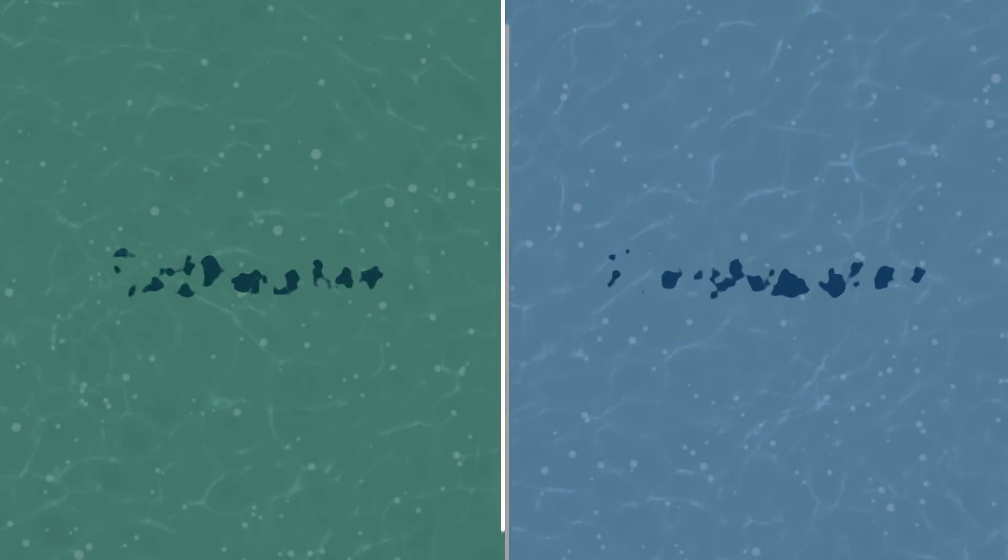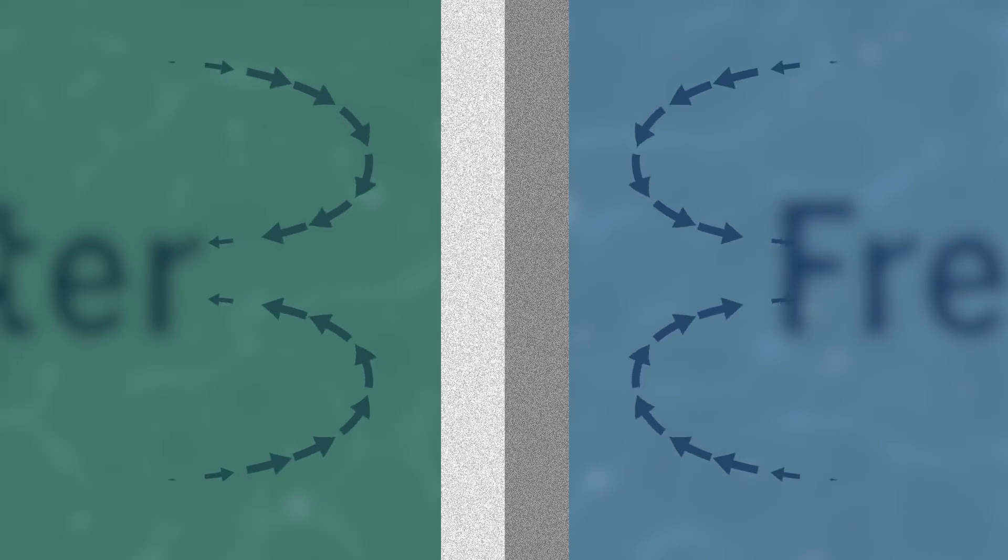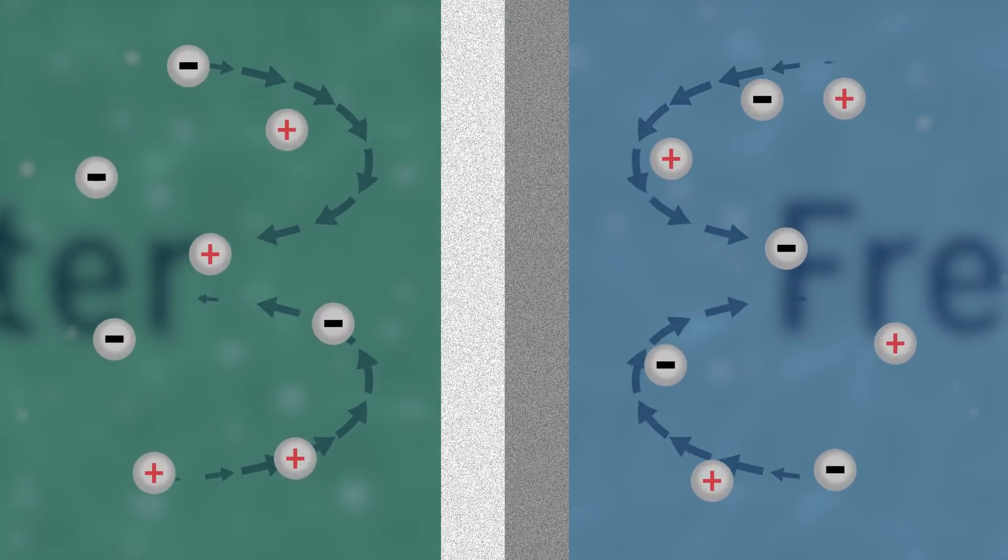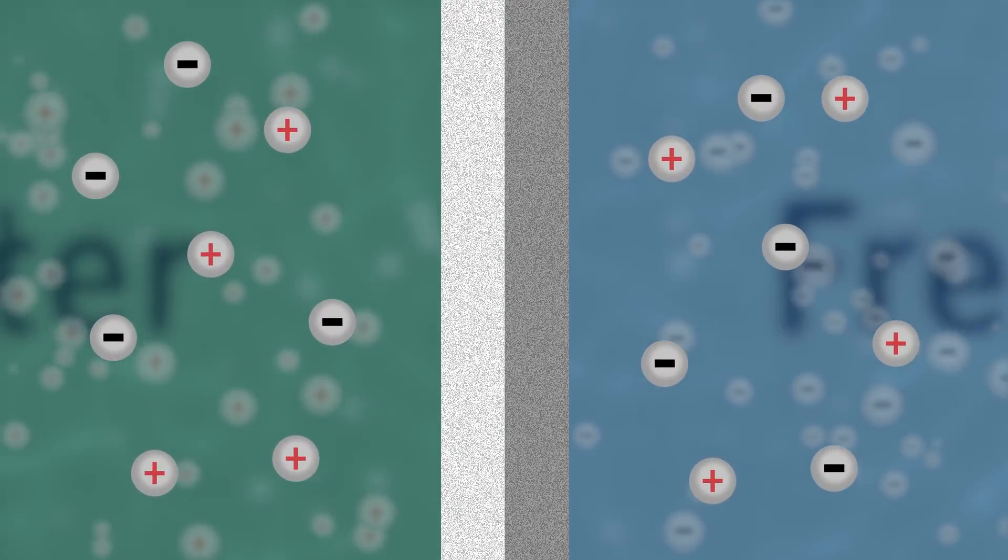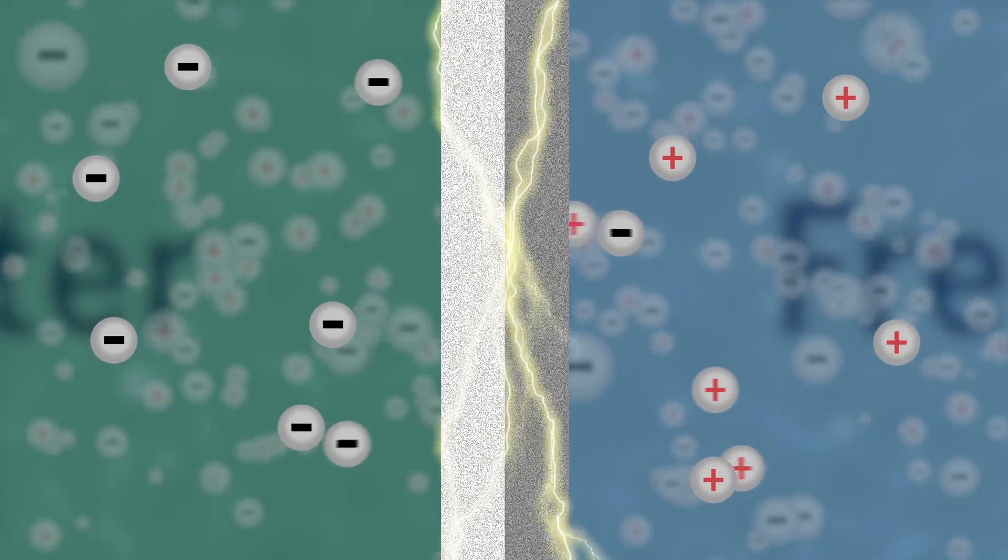By sticking thin membranes in between seawater and freshwater, the holes in the membranes are too small to allow water to move through, like in the eggplant. So instead, the charged particles from the salt move. This flow of charged particles can be harnessed to create electricity.